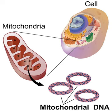Mitochondrial DNA is the DNA located in mitochondria, cellular organelles within eukaryotic cells that convert chemical energy from food into a form that cells can use, adenosine triphosphate. Mitochondrial DNA is only a small portion of the DNA in a eukaryotic cell; most of the DNA can be found in the cell nucleus and, in plants and algae, also in plastids such as chloroplasts.